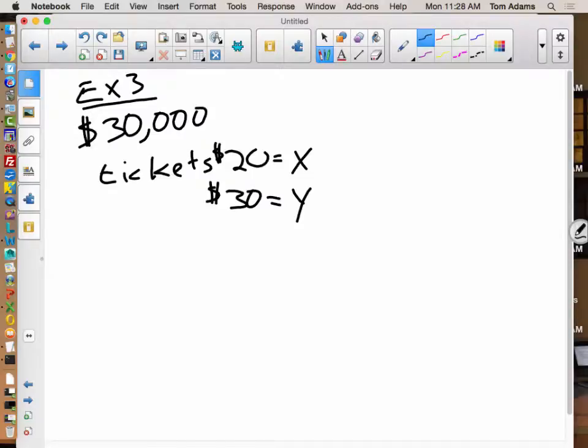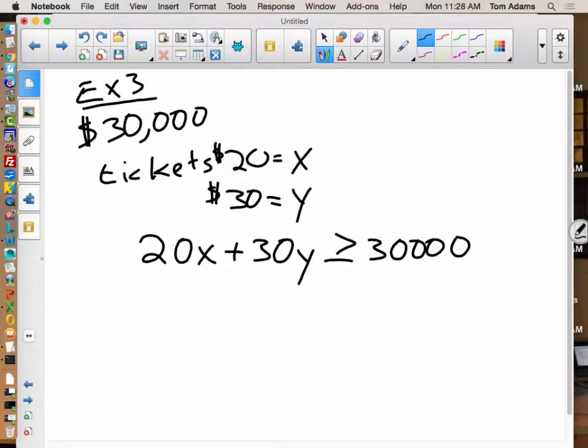So let's get started with that. So then it says, if the center has 500 orchestra seats, how many of each type of seat must they sell? Okay, so there's my second inequality. So the first inequality, obviously, is going to be 20 times X plus 30 times Y. Has to be at least... Yeah, so I heard somebody say greater than or equal to 30,000.